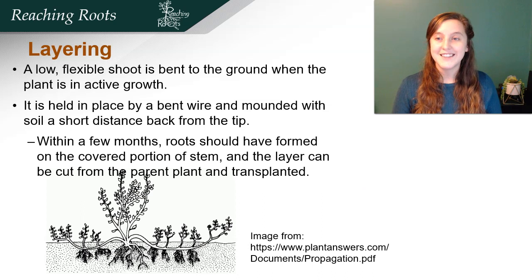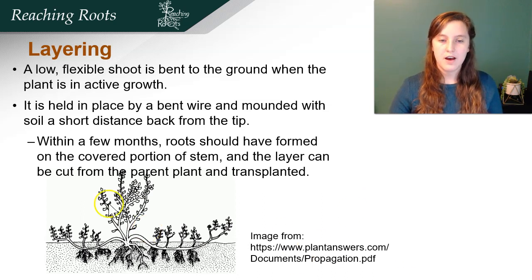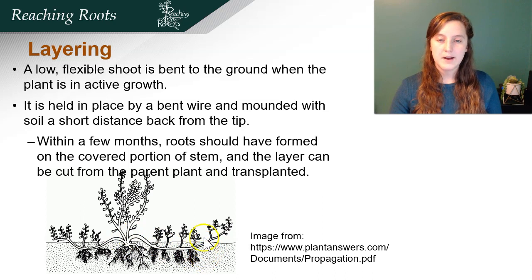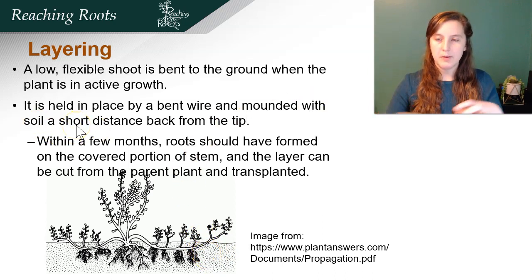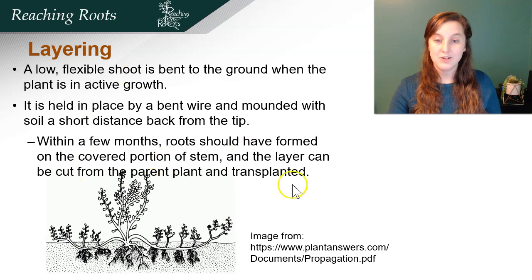Another really cool technique is called layering. You take a low, flexible shoot from a bush and bend it over, attaching it to the soil using a rock or bent wire, then make a small pile of soil over it. Within a few months, roots should have formed on the covered portion of the stem, and these daughter plants can be cut off and transplanted.